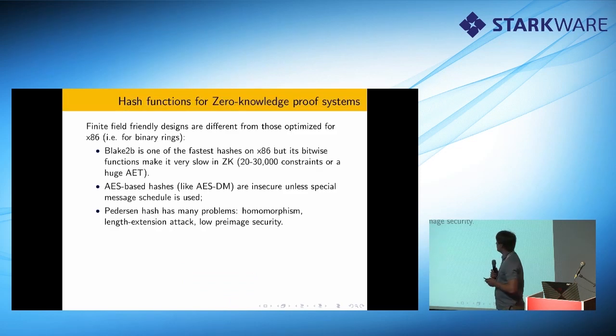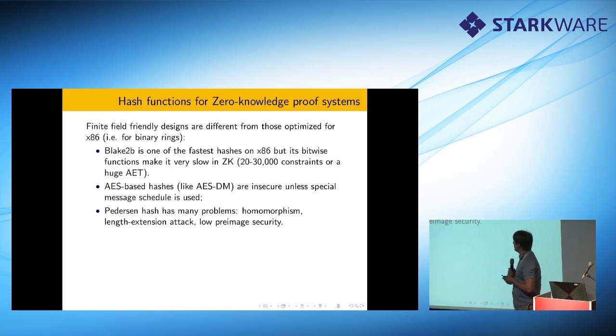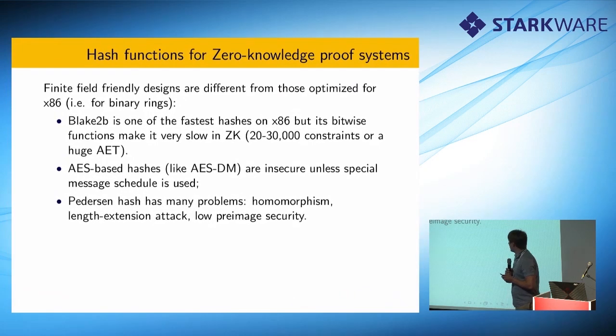How it started: It started when we read the original paper by Eli and co-authors about Starks. And there were mentioned some AES-based hashes which were actually quite insecure. And we realized that there is a need of Stark-friendly designs or zero-knowledge-friendly hash functions in general. We also realized that some hash functions like Pedersen hash, which many are tempted to use because of its collision resistance following from the discrete logarithm hardness, actually has many problems among them low pre-image security and the existence of length extension attack.